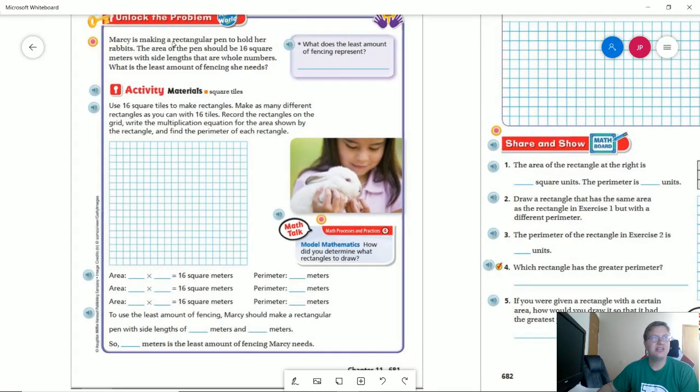So that's kind of the idea of what we're working with with this rabbit pen. And so they want us to make rectangles that use 16 square tiles.